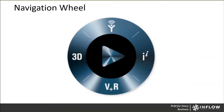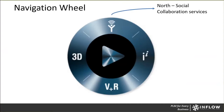Now let's transition to talking more about the platform and what it really is. The platform is separated into quadrants, and Dassault has created a navigation wheel to help with the available applications. The wheel is divided into four quadrants — North, South, East, and West. The North is the social collaboration services, where applications are meant for you to communicate internally with your peers and work together throughout your day.